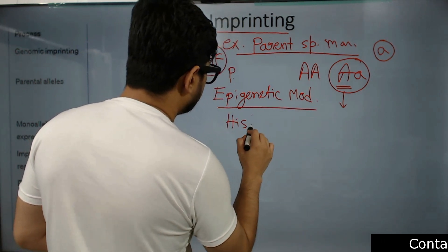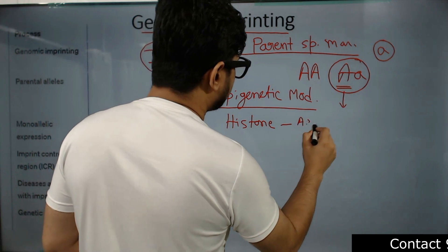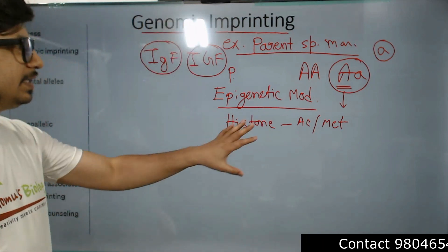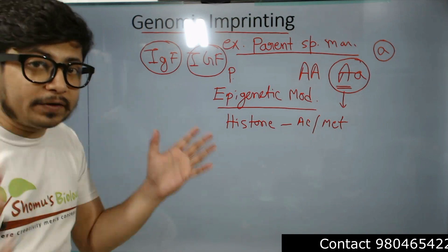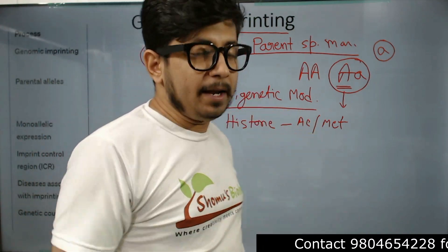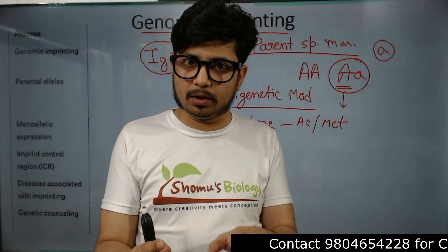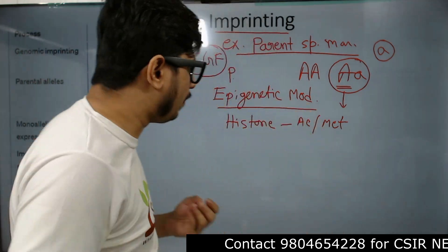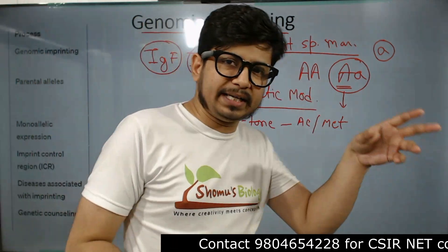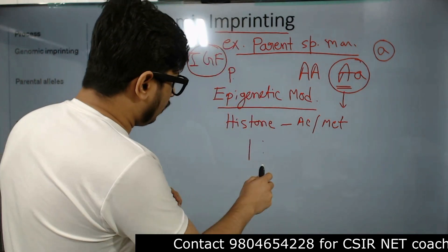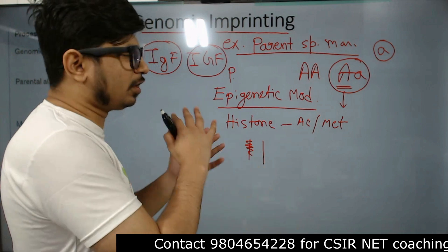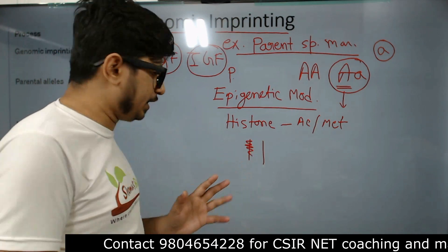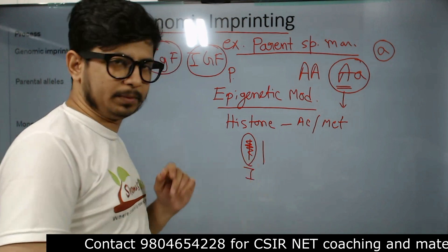Epigenetic modifications — for example, histone modification, histone acetylation, methylation, deacetylation, and nucleosome remodeling — all these matter a lot in order to differentiate between an imprinted gene and a non-imprinted gene. One set of genes will be highly modified epigenetically through histone or DNA modifications, and the other will have no modifications. That is how we can clearly distinguish the imprinted one from the normal one.